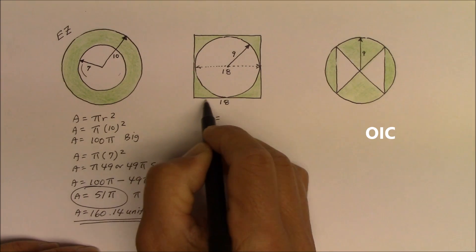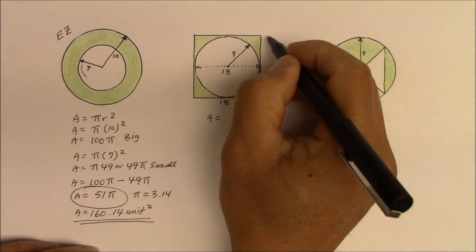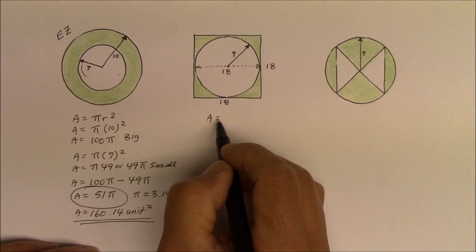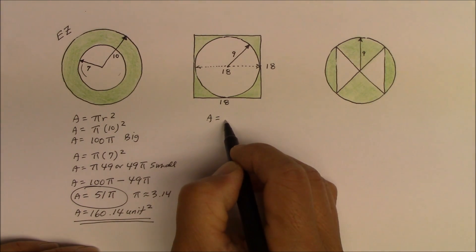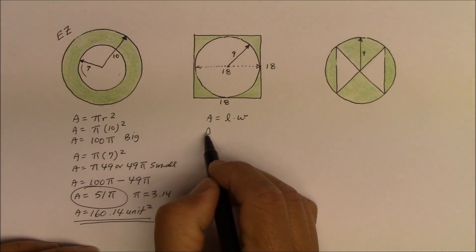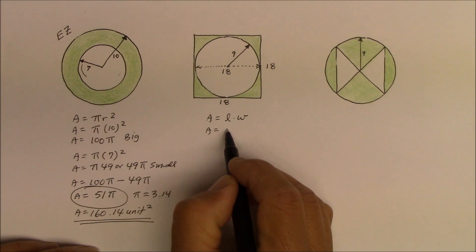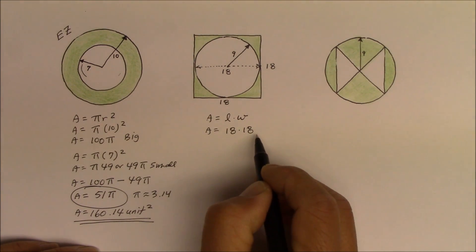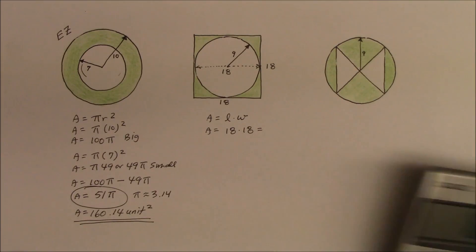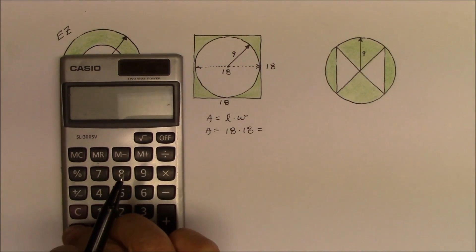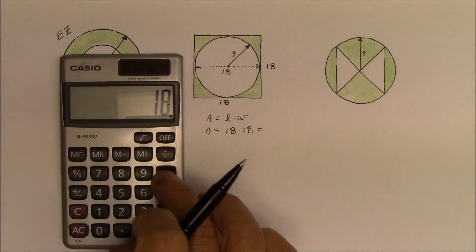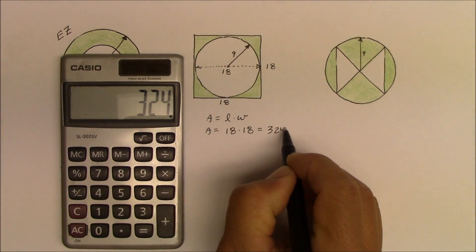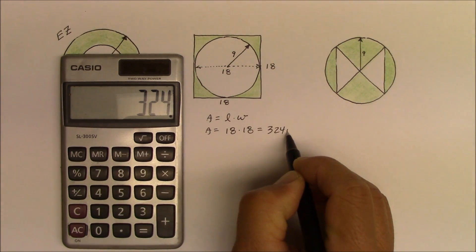If the square is 18 this way, then it must be 18 this way as well. To find the area of a square, it's side times side — length times width. So it is simply 18 times 18, which gives 324 units squared. Areas are measured in square units.